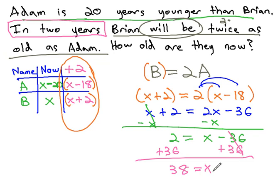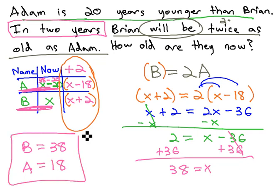x is what is representing Brian's age. Brian is 38 years old. Adam, right now, is x minus 20. 38 minus 20 is simply 18. We now see that Adam is 20 years younger than Brian, and in 2 years, Brian will be twice as old as Adam.